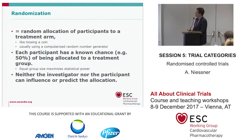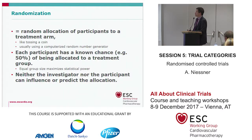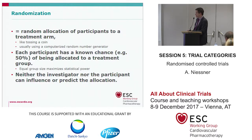Randomization means random allocation of participants to a treatment arm — it's like tossing a coin. Usually you use a computerized random number generator, and each participant has a known chance, usually 50%, of being allocated to a treatment group. If you use equal group size, which is usually the case, you maximize your statistical power.